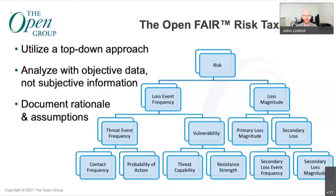Open FAIR also advocates for using objective data as much as possible, not subjective information. For example: how many laptops did your organization lose in a year? One hundred is a much better answer than 'some.' Trying to find those concrete values dramatically improves the results you get with an Open FAIR analysis. Open FAIR also advocates for documenting your rationale and assumptions for estimates, so that if analysts disagree, management questions results, or there's confusion about how results were obtained, you can look back, make adjustments, and see whether changes are substantial enough to affect your decisions.